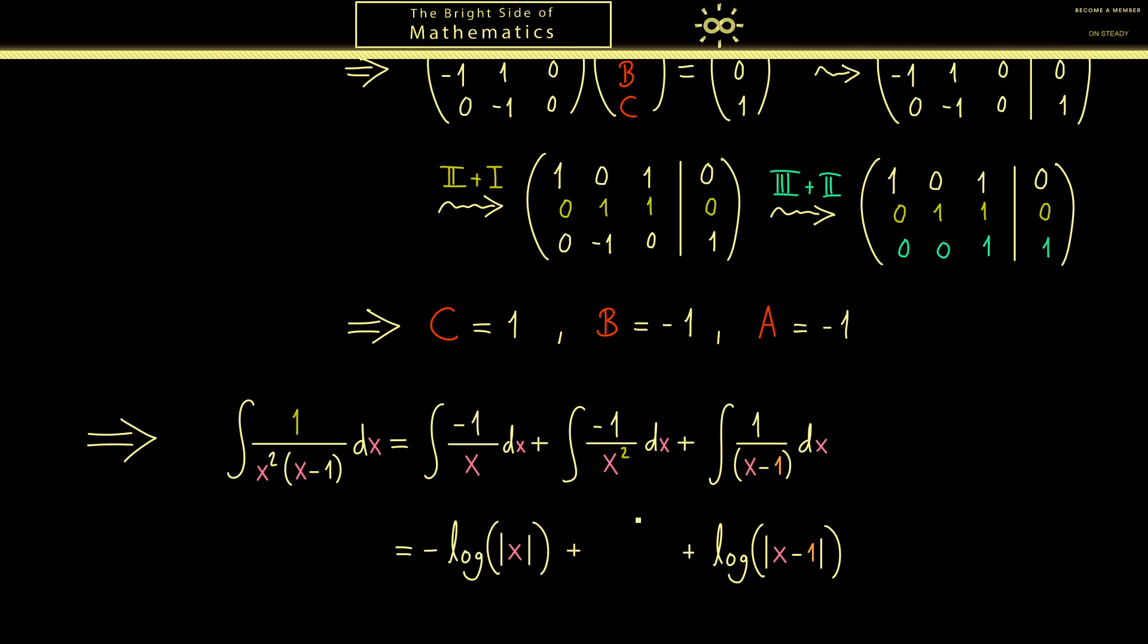Therefore the last equation we have to answer is what is the antiderivative of minus 1 over x squared. However there we know the formula this is simply 1 over x. So you see this is simply applying the power rule when you form derivatives.